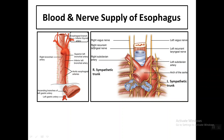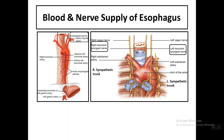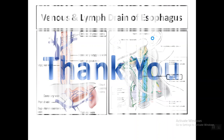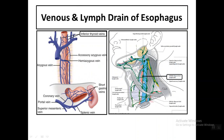The blood supply to the oesophagus in the neck is via oesophageal branches of the inferior thyroid artery. Venous drainage is to the inferior thyroid veins draining into the brachiocephalic trunk. Lymphatic drainage is to the deep cervical lymph nodes.